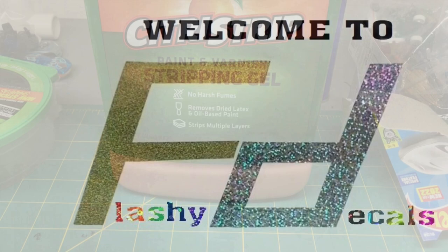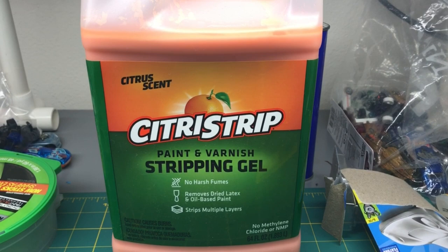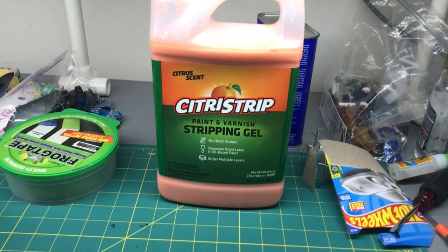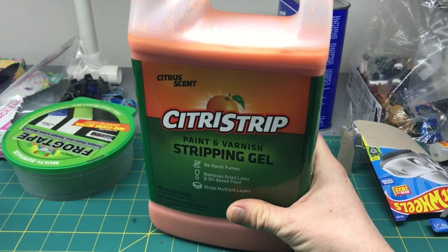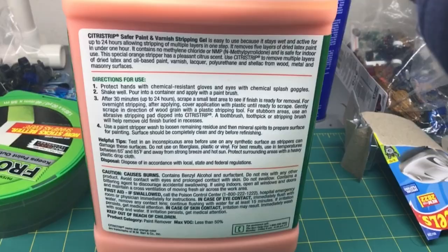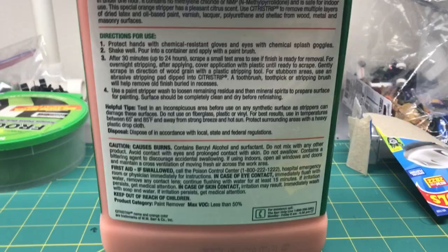Alright, starting off the painting and reassembling series. This is series number three from Flashy Decals. Thank you for watching the first two series. Series three here is all about painting and reassembling. To start off, I got this stuff - I saw it in some other Hot Wheels disassembling and painting videos. Right now we have the Citristrip paint and varnish stripping gel. Here are the instructions, directions, cautions, and first aid.